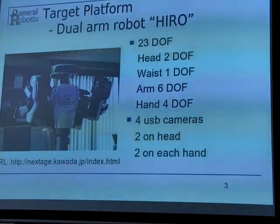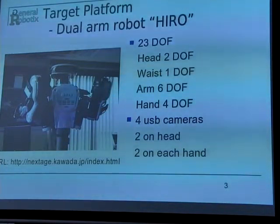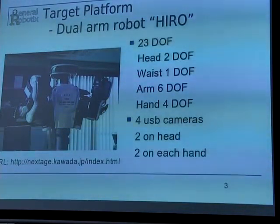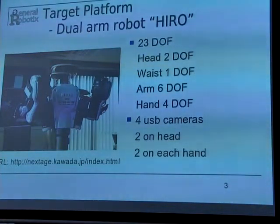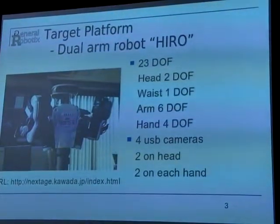This is the target platform: dual-armed robot Hiro. He has 23 degrees of freedom in total — two in the head, one in the waist, six in each arm, and four in each hand. Installed are four USB cameras: two on the head and two on each hand. Hiro has been released from Kawada Industries Incorporated as Next Stage.